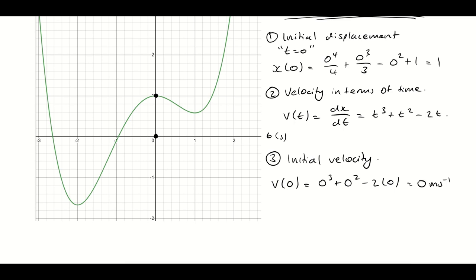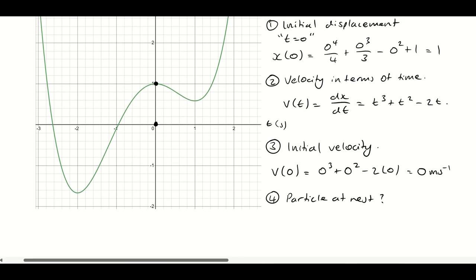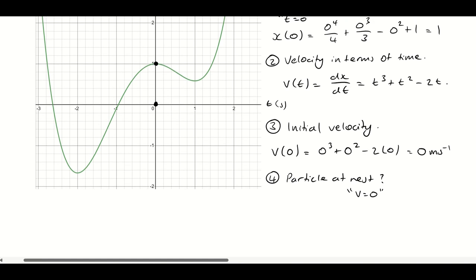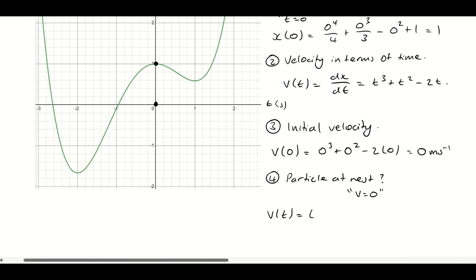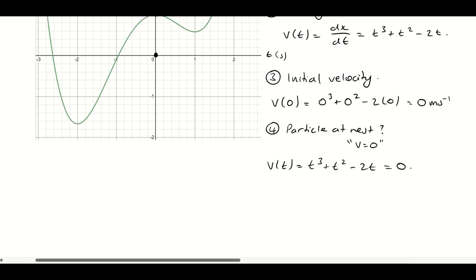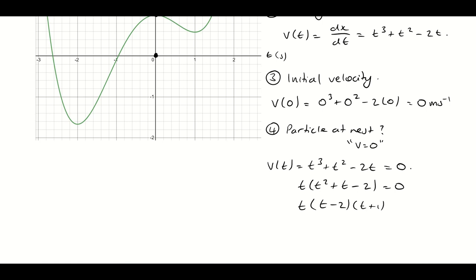A trickier question: when is the particle at rest? At rest means the velocity equals 0. We need to find when v(t) = t cubed plus t squared minus 2t equals 0. Factorising t out the front: t(t squared plus t minus 2) equals 0. We can further factorise the brackets: t(t plus 2)(t minus 1) equals 0.